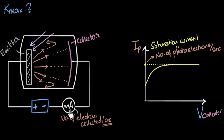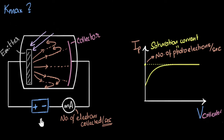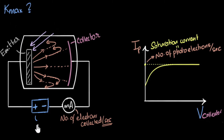At two volts, some more electrons turn back, but the fastest electron is still very powerful — it slows down but doesn't turn back and still gets collected. So even at two volts, I get a small current. The fastest electrons are not stopped yet. I keep increasing the voltage; the current keeps decreasing but the fastest electrons are still making it. At 2.9 volts, I still get a current, meaning the fastest electron is still reaching. So I increase from 2.9 volts to 3 volts.